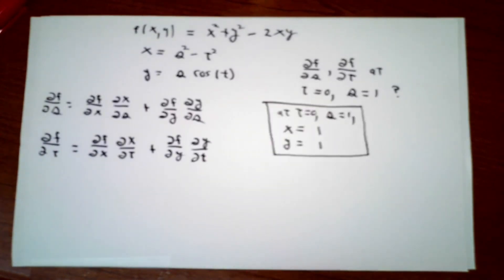Firstly, by direct substitution, when t is 0 and s is 1, x must be 1 squared minus 0 squared, or 1, and y must be 1 times cosine 0, 1 times 1, which is 1. I now know the x and the y value, which I need to know in order to evaluate the partial derivatives.